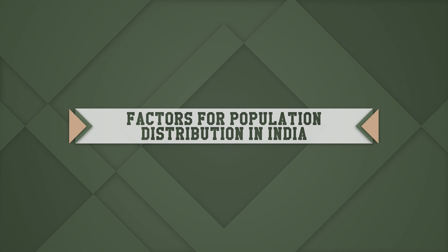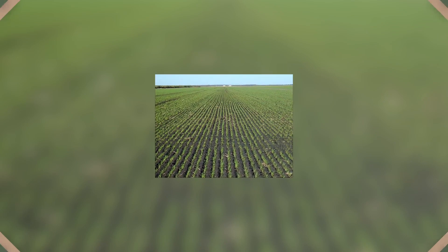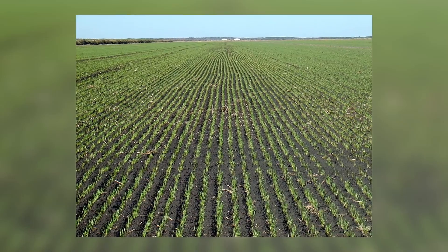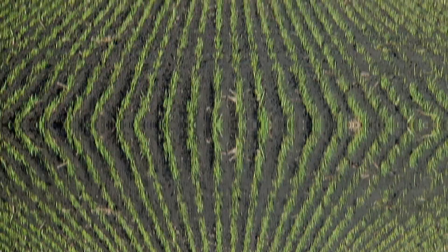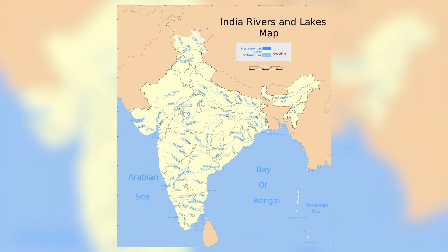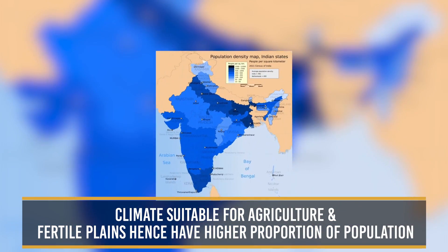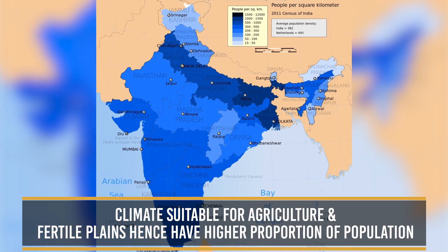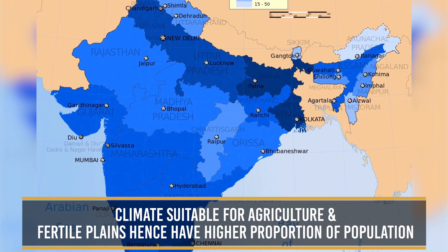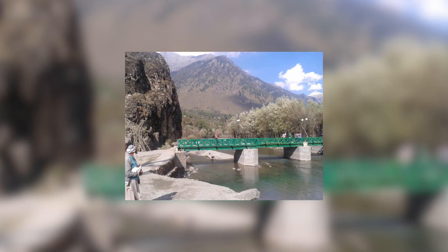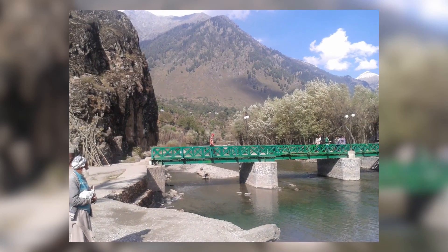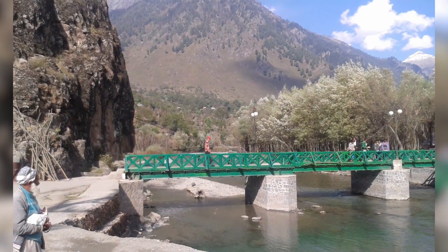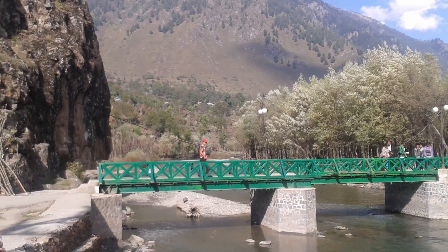Now we are going to look at the factors for population distribution in India. Physical factors such as climate, terrain, and availability of water play a key role. North Indian Plains, deltas, and coastal plains have climates suitable for agriculture and fertile plains, hence have a higher proportion of population. Mountainous and forested regions of southern and central Indian states, Himalayan states, and some northeastern states are less populated.